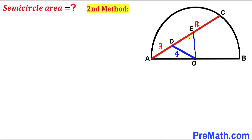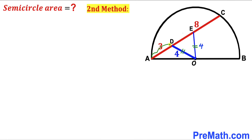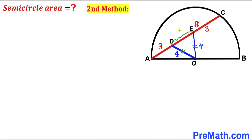Here's our second approach. I have added an auxiliary line OE such that OE equals OD equals 4 units. Focusing on triangle ODE, this is an isosceles triangle since those two side lengths are equal. We observe that segment AD equals segment EC, so EC is 3 units as well. The whole chord AC is 3 plus 8 equals 11 units, so the mid-segment DE is 5 units.